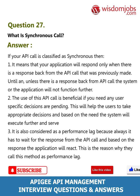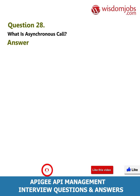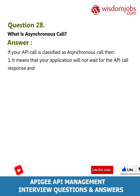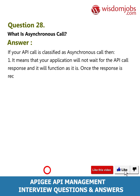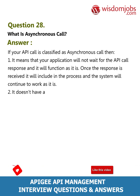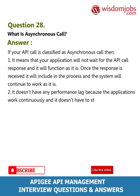Question 28: What is an asynchronous call? Answer: If your API call is classified as asynchronous, it means that your application will not wait for the API call response and will function as it is. Once the response is received, it will be included in the process. It doesn't have any performance lag because the application works continuously and doesn't have to stop for any specific response from the API calls.